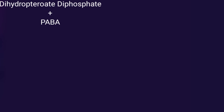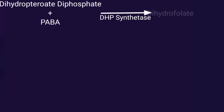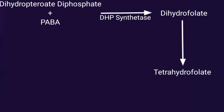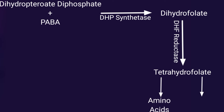Here we have the RBC. Inside the RBC you can see the parasite which causes malaria. Inside the parasite, dihydropteroate diphosphate along with para-aminobenzoic acid is converted by the dihydropteroate synthetase enzyme into dihydrofolate, or dihydrofolic acid. This dihydrofolic acid is then converted into tetrahydrofolate, or tetrahydrofolic acid, with the help of the enzyme dihydrofolate reductase.